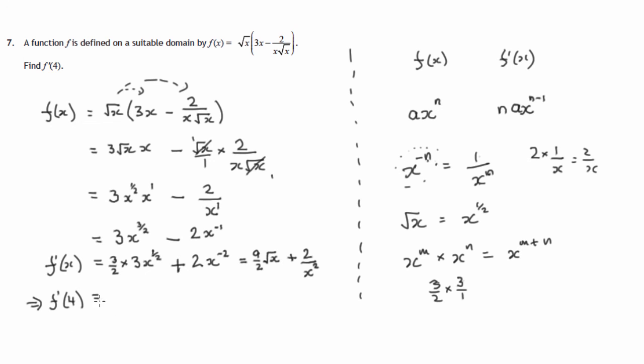So we now substitute 4. We've got 9 over 2 times the square root of 4 plus 2 over 4 squared. That's 9 over 2 times the square root of 4 we know is 2. 4 squared is 16. These 2's cancel. We get left with 9. 2 cancels top bottom here. We divide top bottom by 2. We get 1 over 8. So our final answer, 9 and 1 eighth.